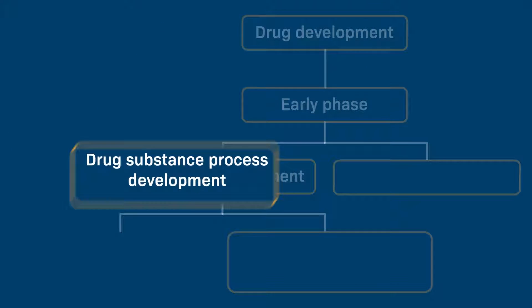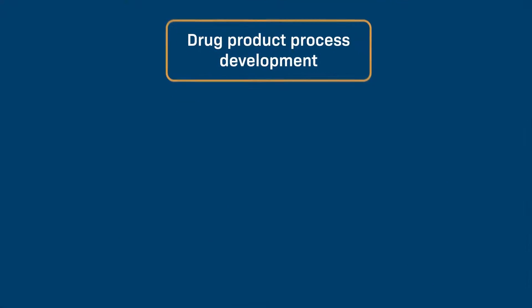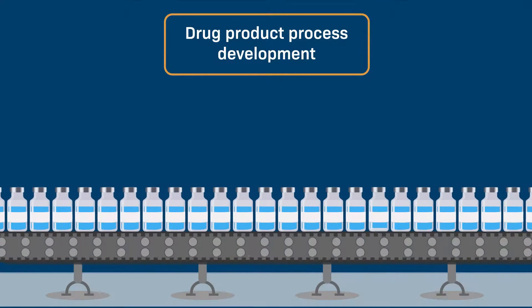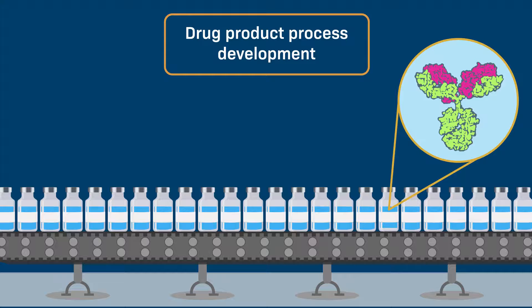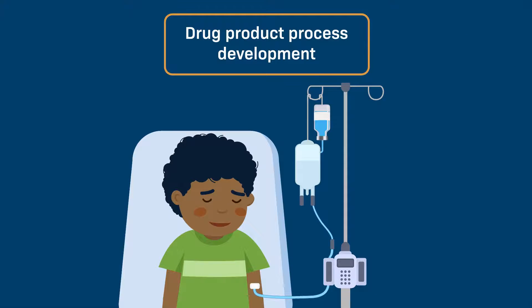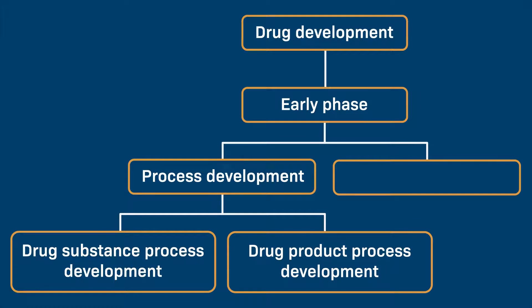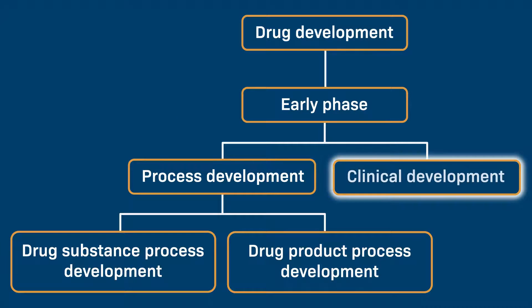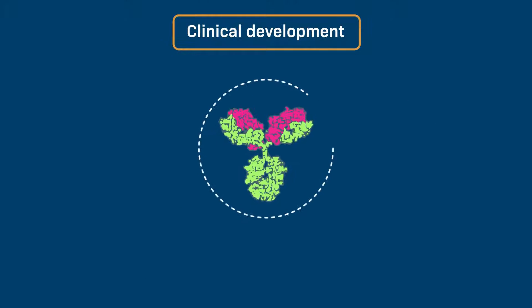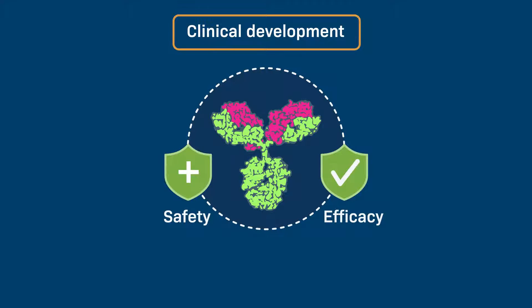The second category is called drug product process development. This is where the drug substance is formulated into a final marketable product that will be used by patients. The second pathway, which follows the early phase, is known as clinical development. In this pathway, the drug candidate is evaluated for its safety and efficacy and how it is metabolized in the body.